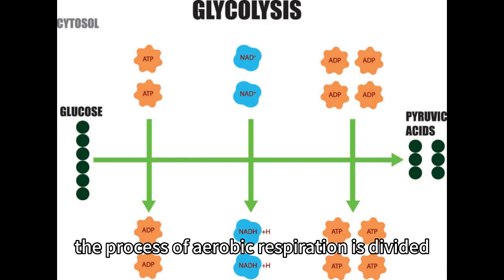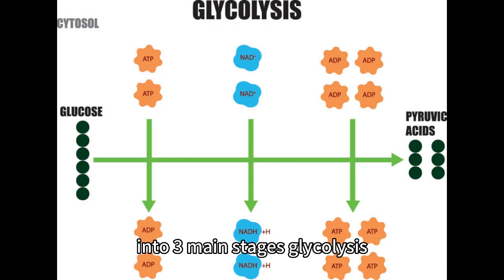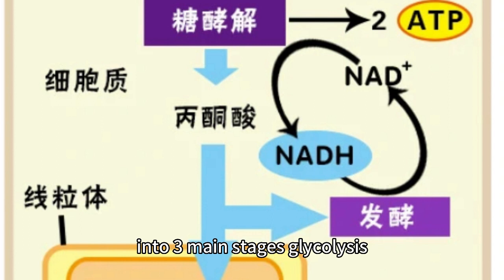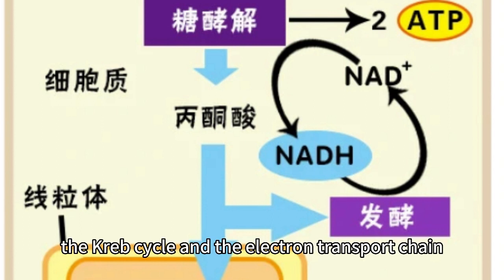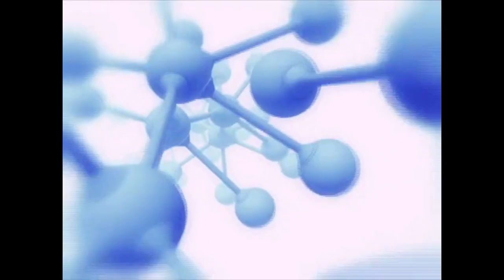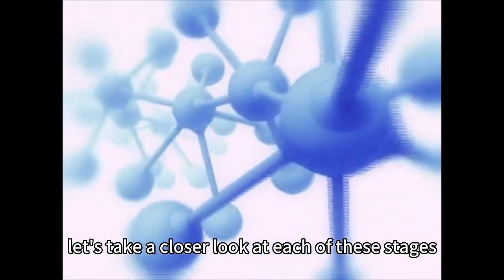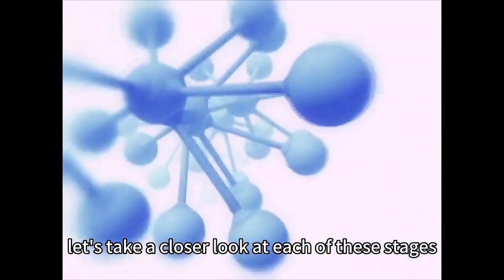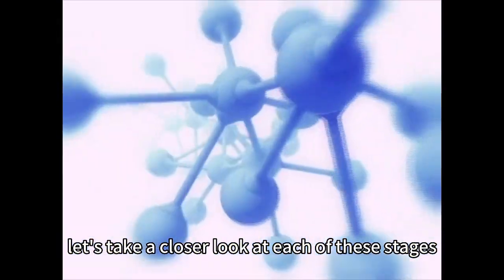The process of aerobic respiration is divided into three main stages: glycolysis, the Krebs cycle, and the electron transport chain. Let's take a closer look at each of these stages.